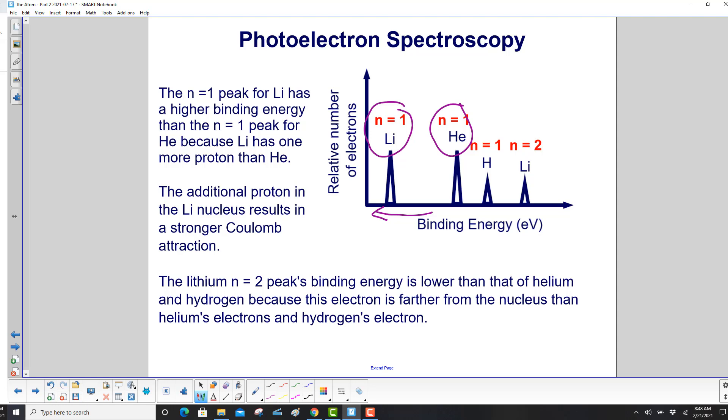The lithium n equal 2 peak, its binding energy is lower than that of both helium and hydrogen, because this electron is farther from the nucleus than helium's electrons and hydrogen's electron from their nucleus.